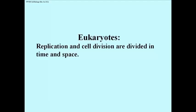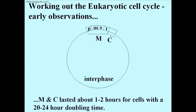In the cells of higher organisms, replication and cell division are separated in time and space. In other words, DNA synthesis occurs at one point, and the cells divide at another time. Here are some very early observations in working out the eukaryotic cell cycle. What you see is a circle representing, from any one point to another, the generation of new cells.